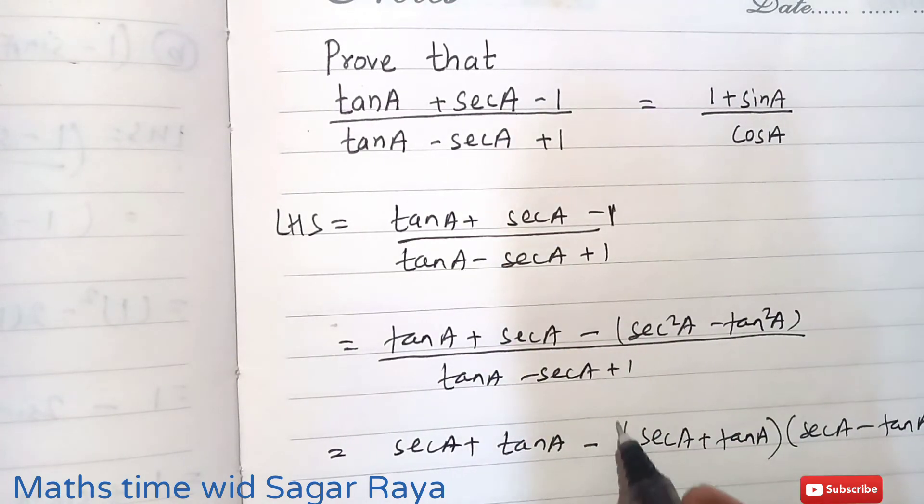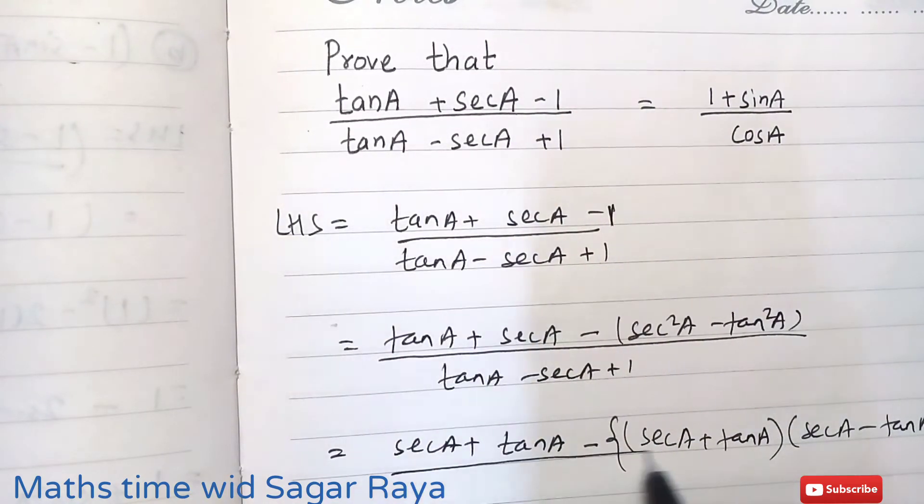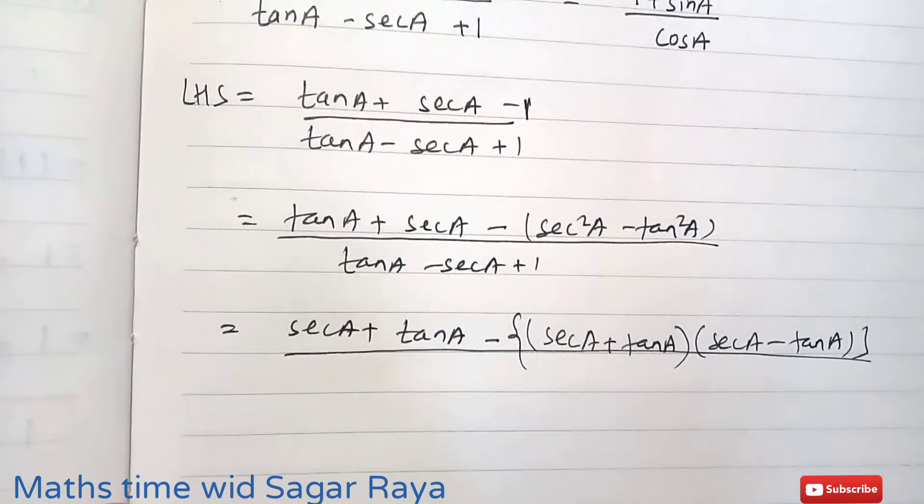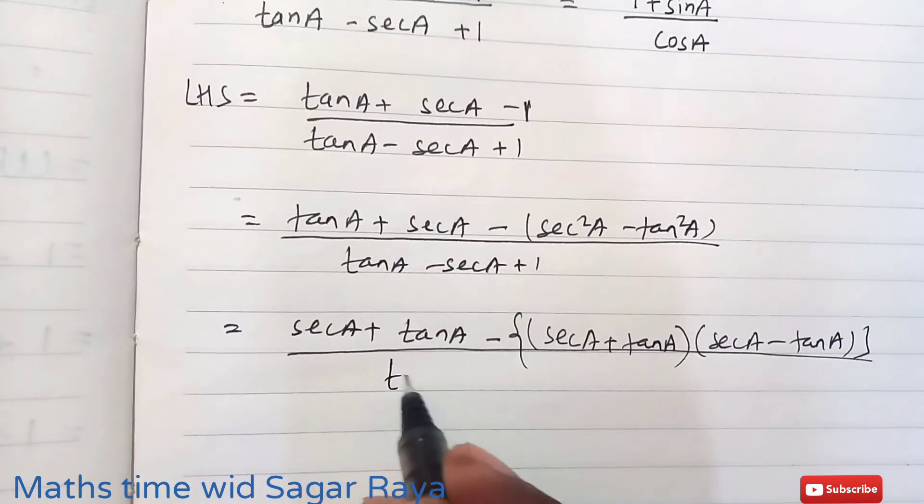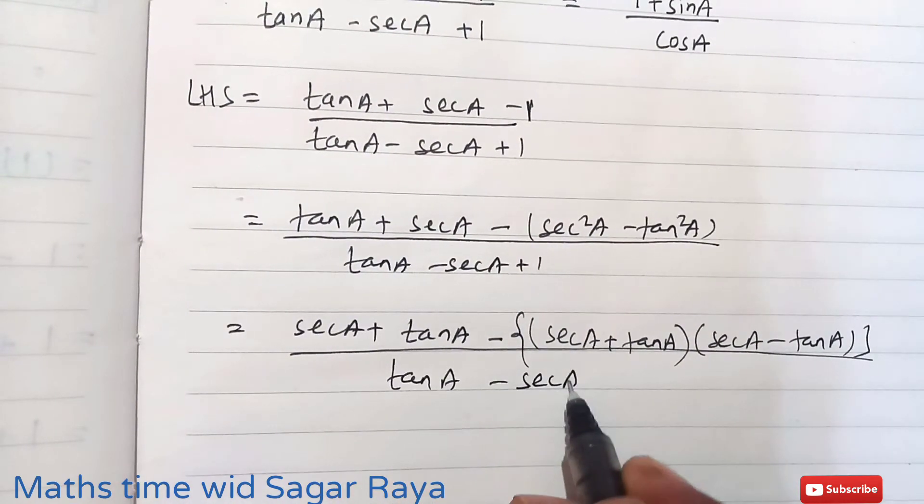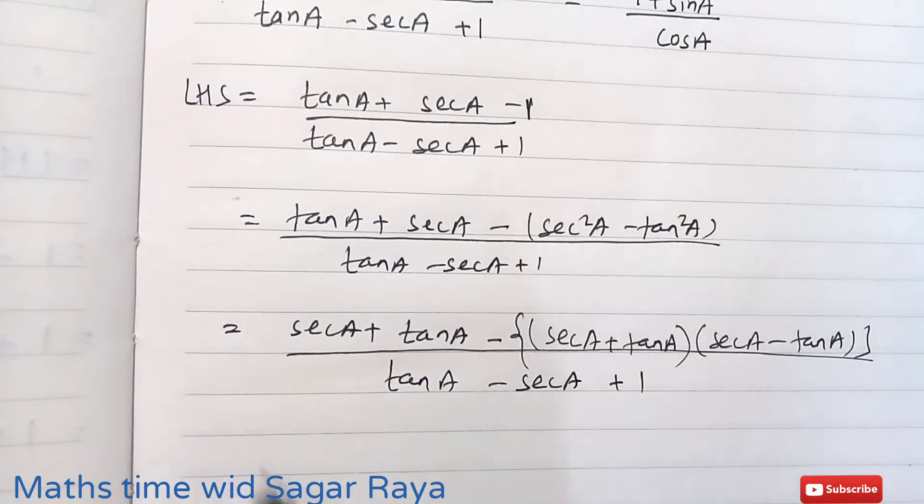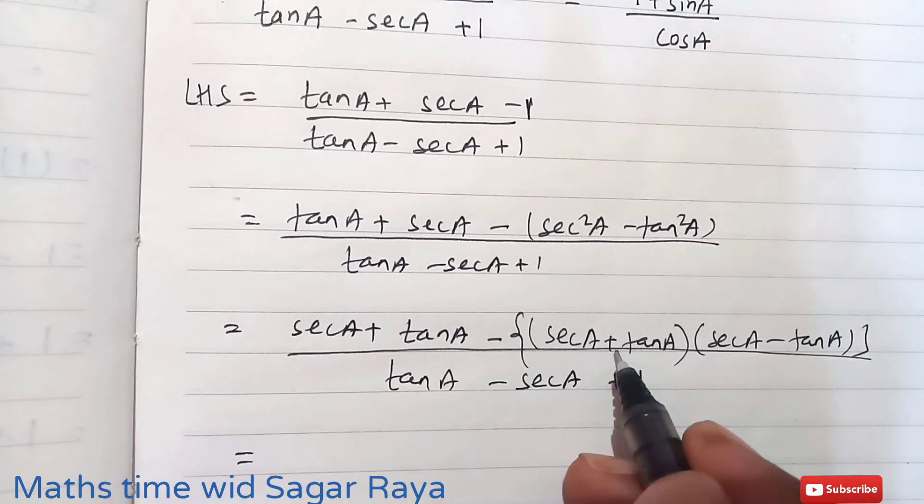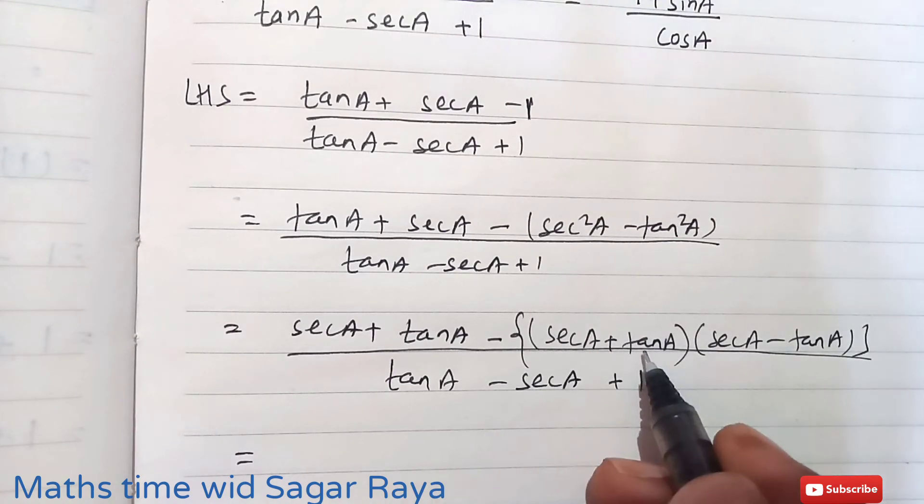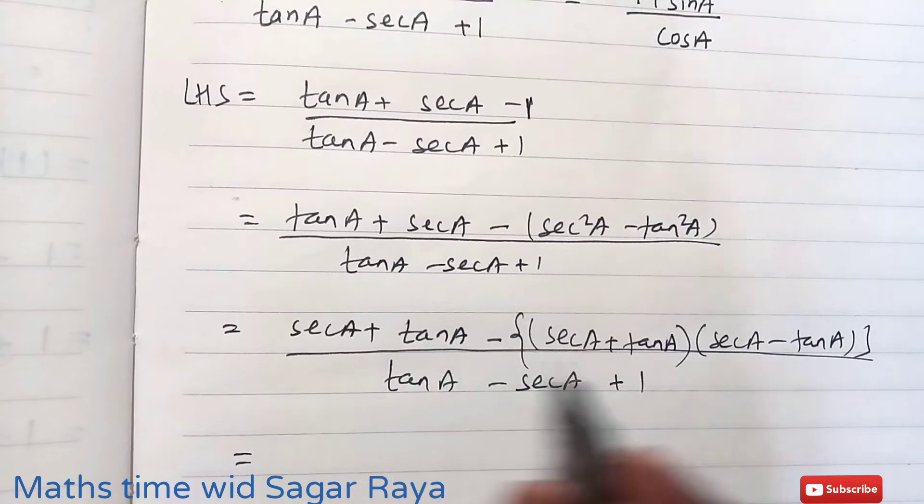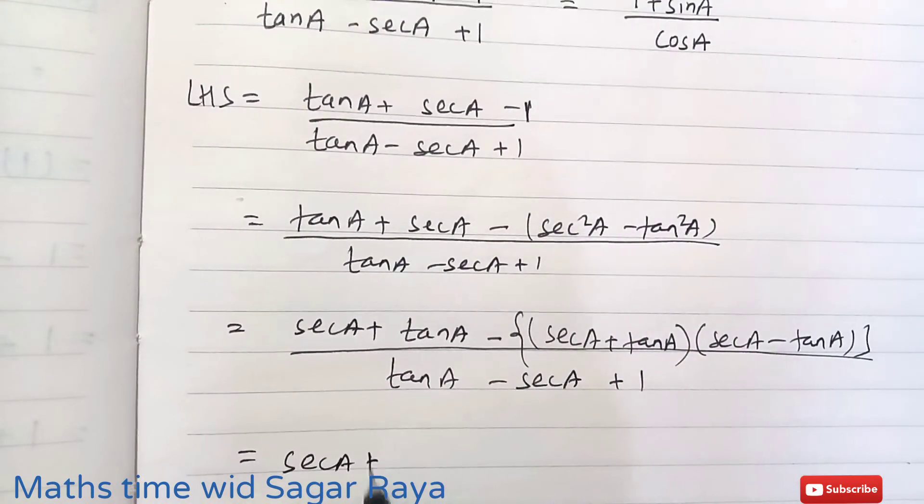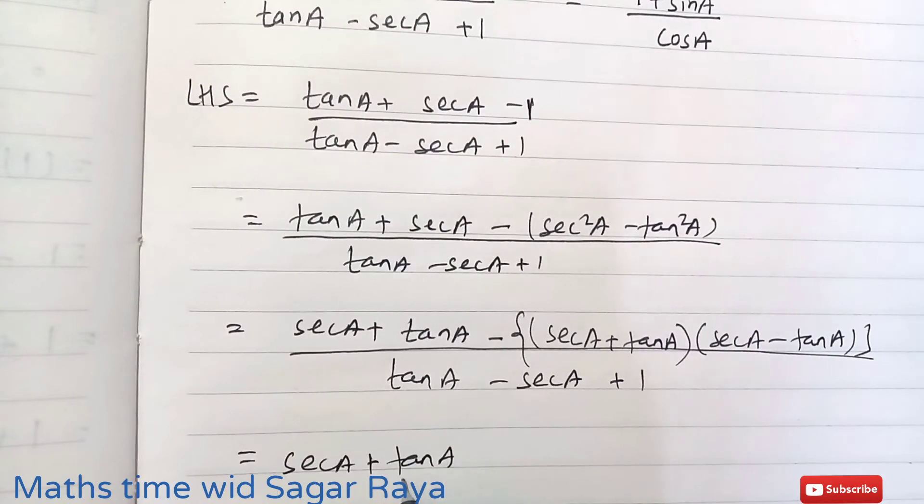So I can break this in a + b or a - b form. Now the denominator remains as it is. So here also you can see secA + tanA, and here also secA + tanA, and here secA - tanA. So in between these two terms you can take secA + tanA common.